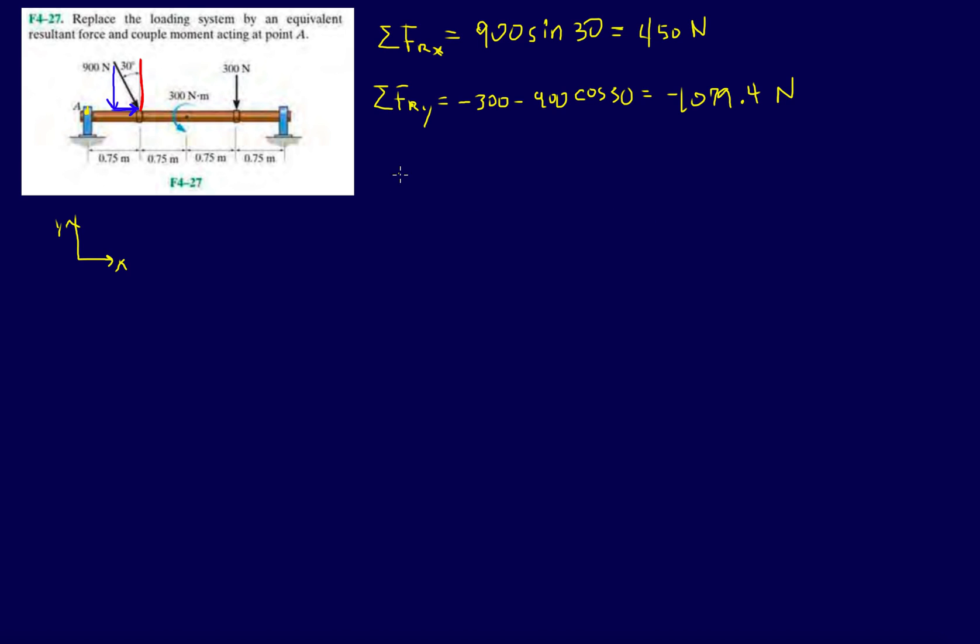Now let's find the resultant. The resultant is the square root of the components squared sum together: square root of 450 squared plus 1079.4 squared. So 1169.5 Newtons.